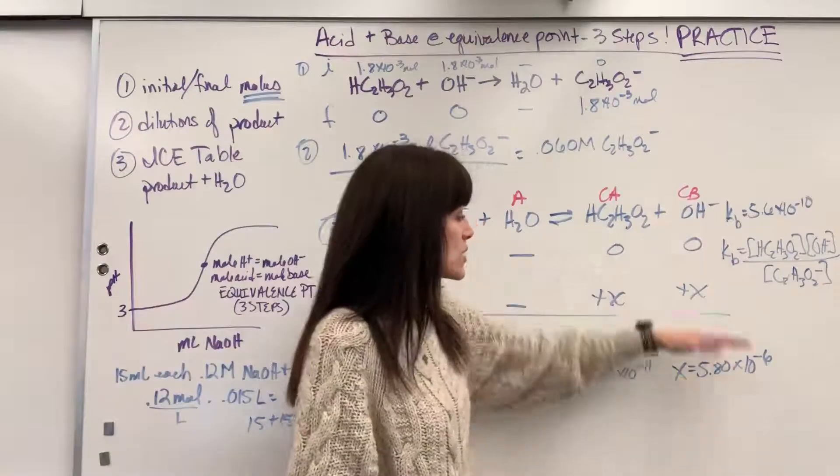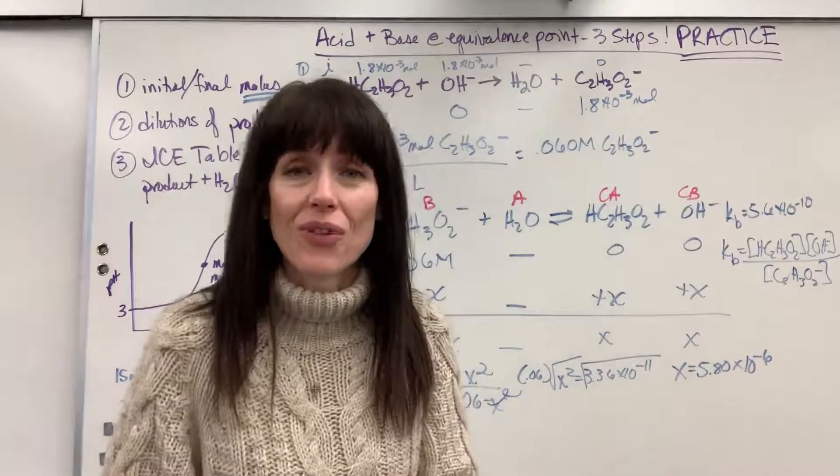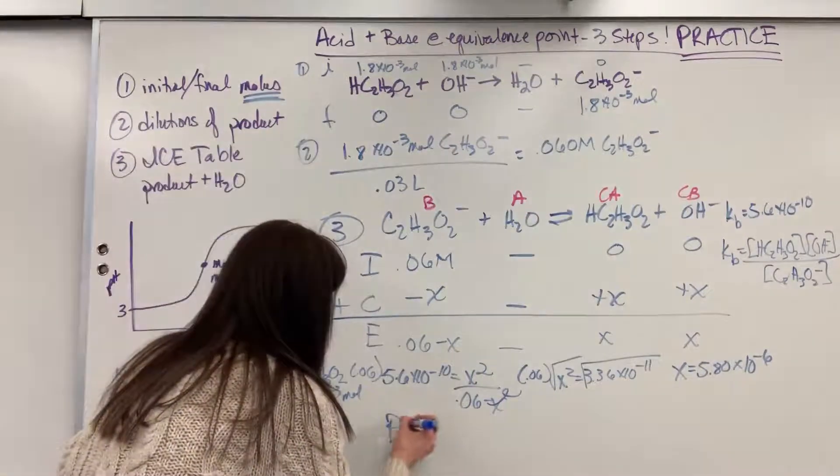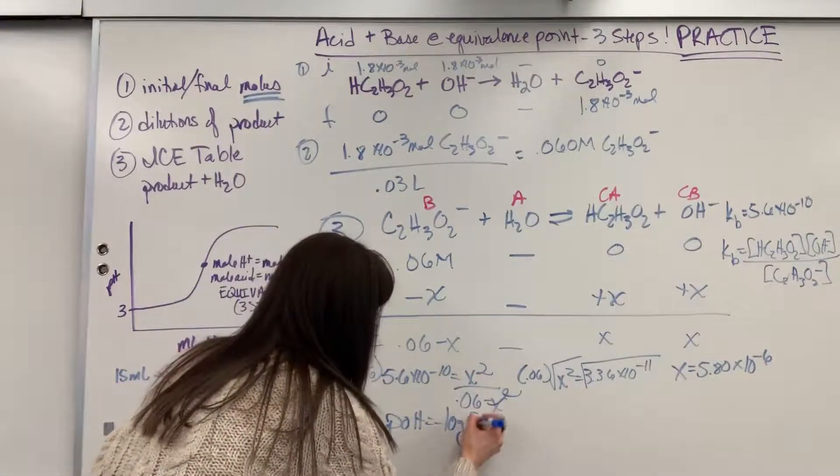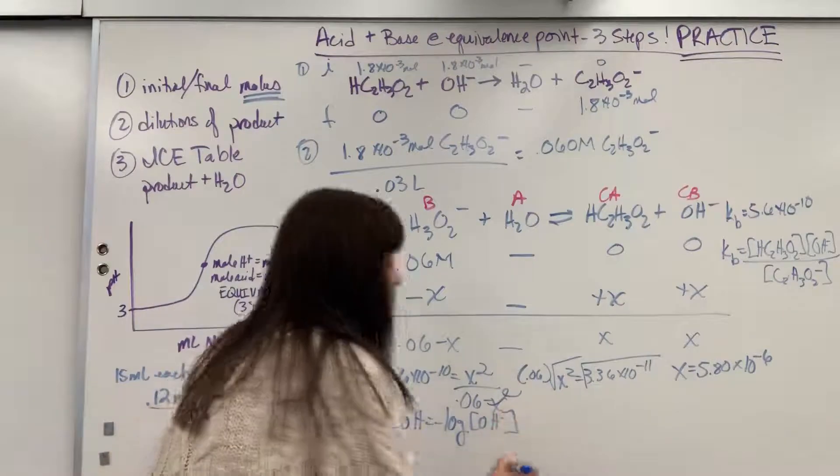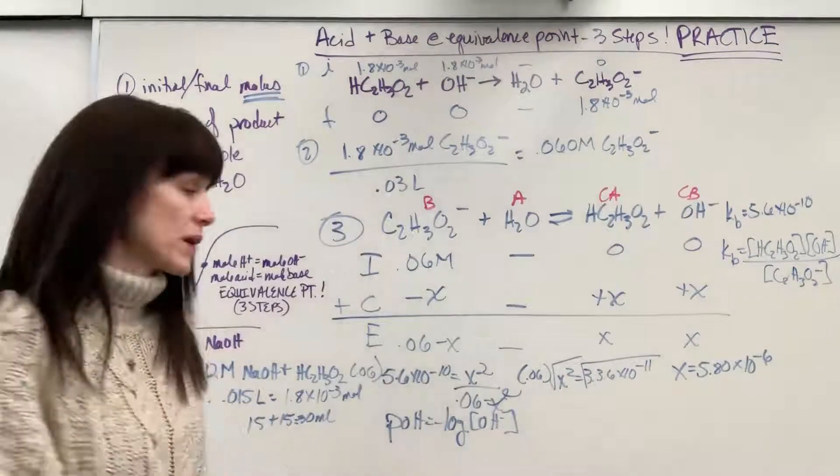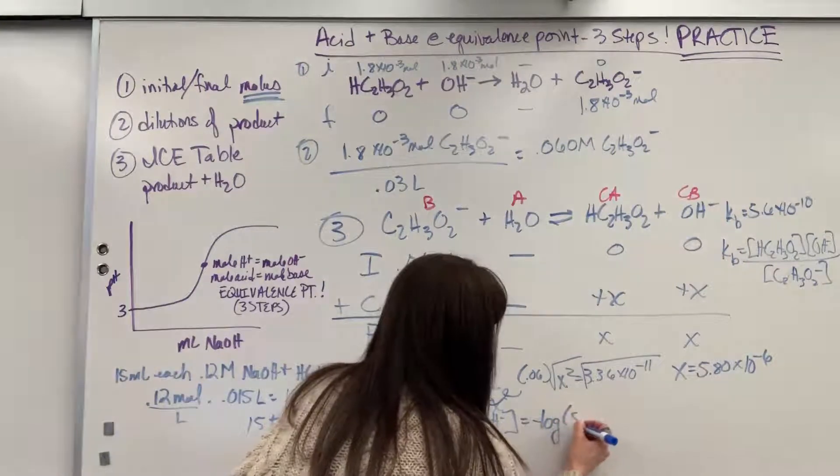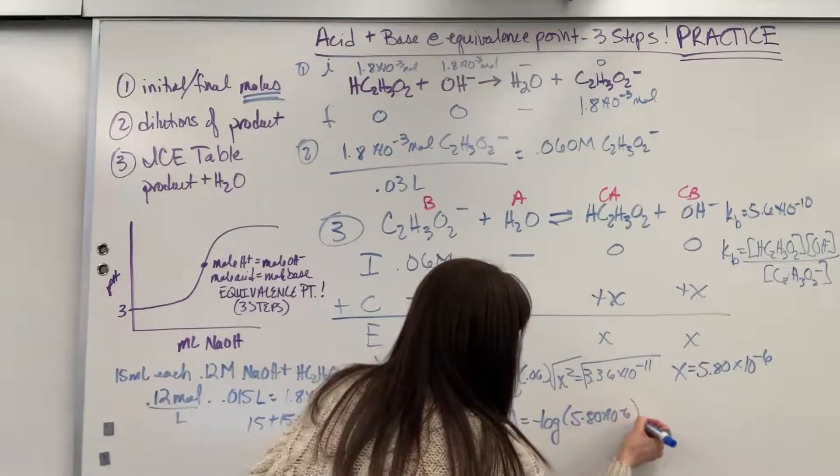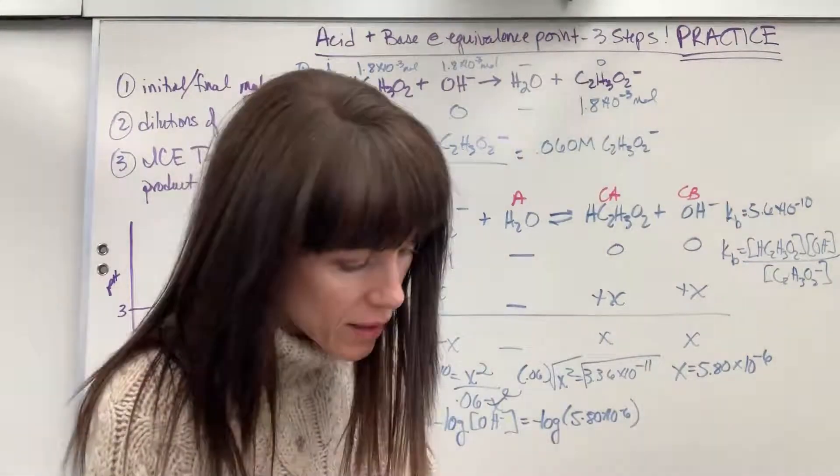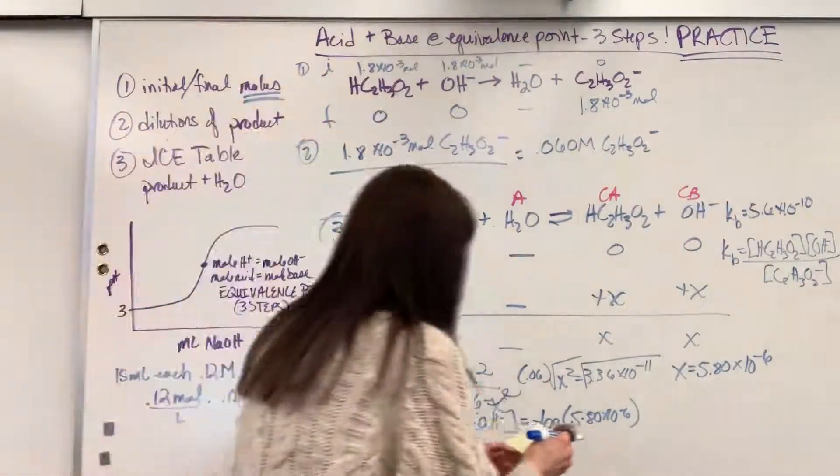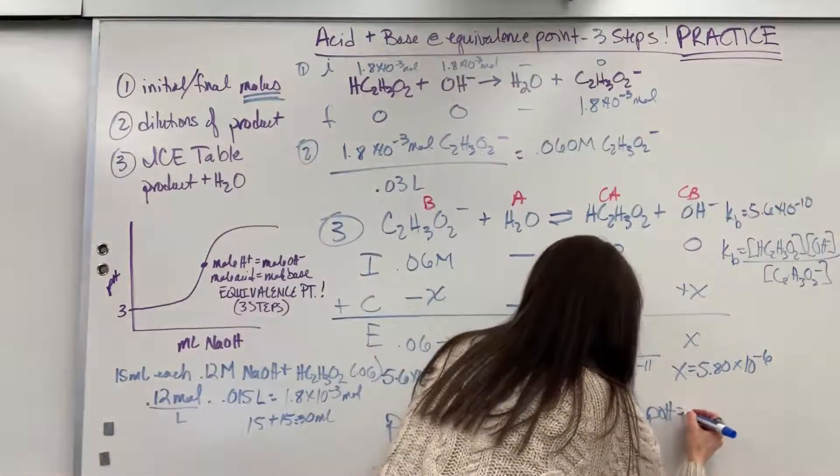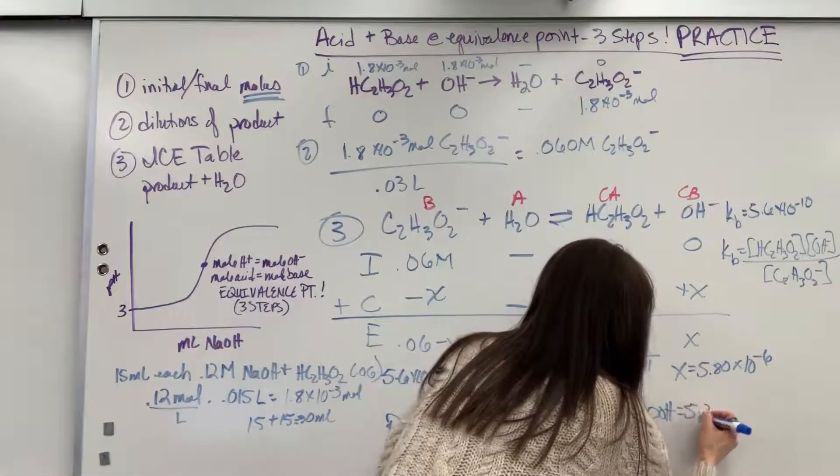So if I take the concentration of OH due to the negative log, we find pOH. pOH equals the negative log of hydroxide. So let's go ahead and plug it in. This will equal negative log of 5.8 times 10 to the minus 6. When we put that in our calculator, we are going to get pOH equals 5.24.